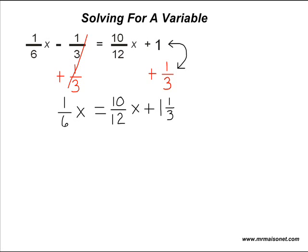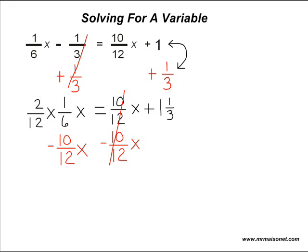Next, we shall combine our x terms together, making sure they are on the same side of the equal sign. We combine 1 sixth x and negative 10 twelfths x, but first we need a common denominator, so we turn 1 sixth x into 2 twelfths x. Because one term is positive and the other negative, we subtract, which leaves us with 8 twelfths. Our sign is negative because we use the sign of the larger absolute value, giving us negative 8 twelfths times x is equal to 1 and 1 third.